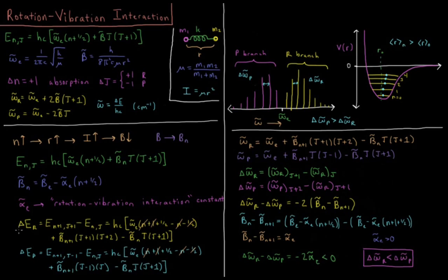So now using this model, we can calculate the change in energy in the R branch and in the P branch. That delta E is going to end up giving us our frequency of our light that we absorb in the R branch and the P branch. So that's going to be omega e plus b bar n plus 1 j plus 1 times j plus 2 minus b bar n j times j plus 1, because in the R branch we're going from n j to n plus 1 j plus 1.